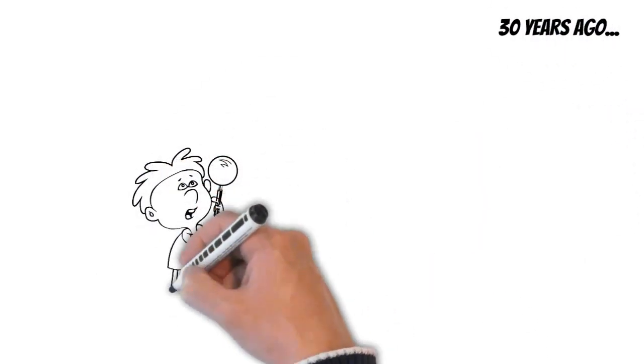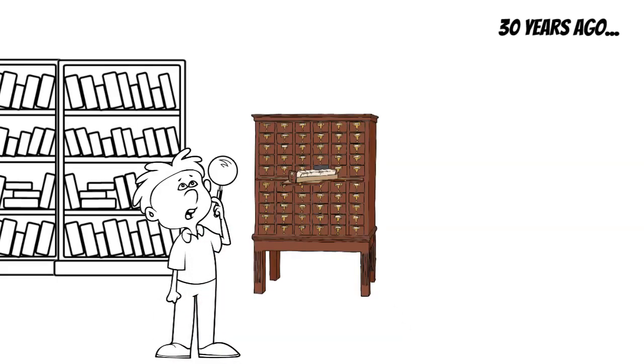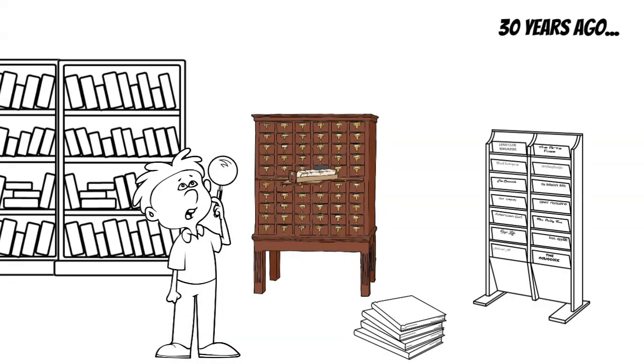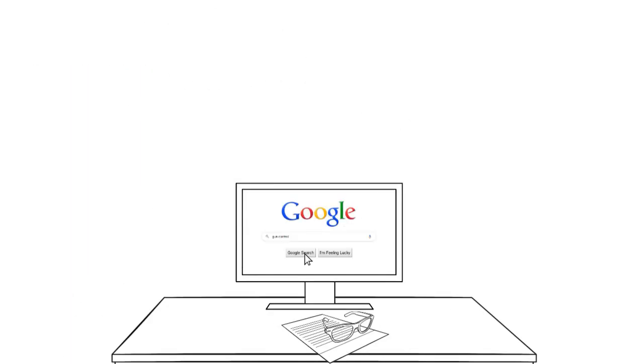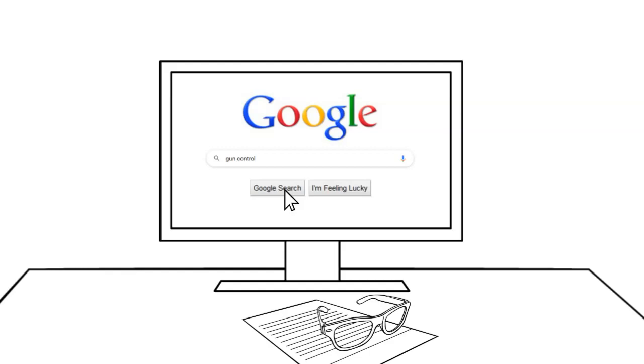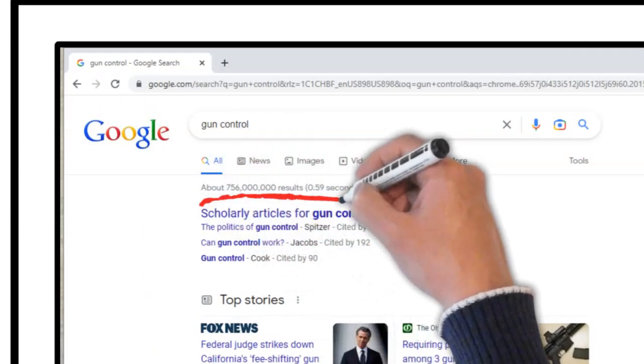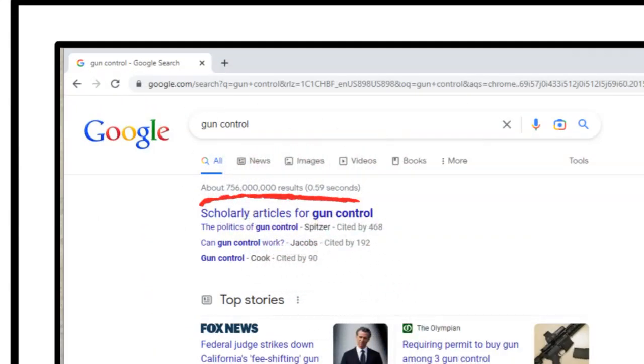Thirty years ago, that meant going to the library using the Dewey Decimal system and pouring through books, old magazines, and microfilms. Today, we have the internet, which can release an avalanche of information with a click. But as savvy researchers know, it's not all reliable.